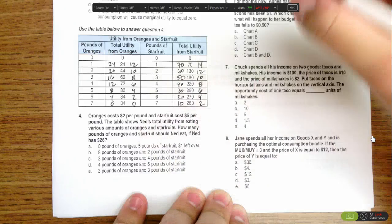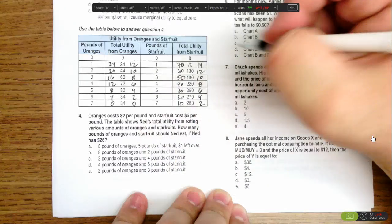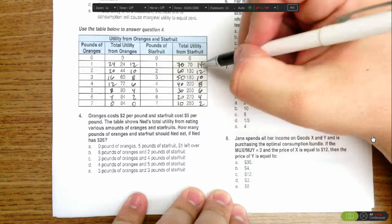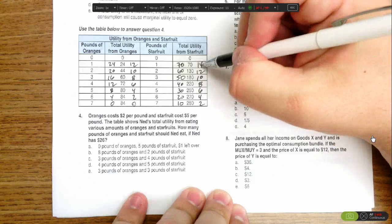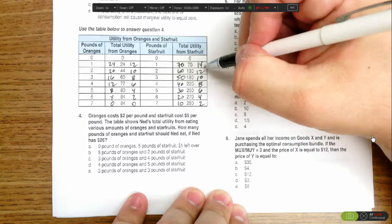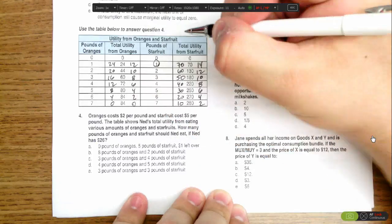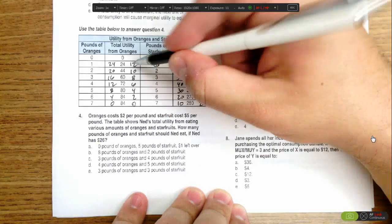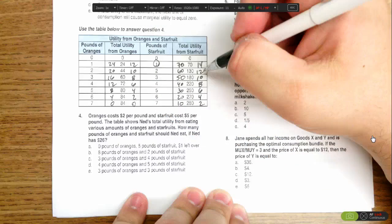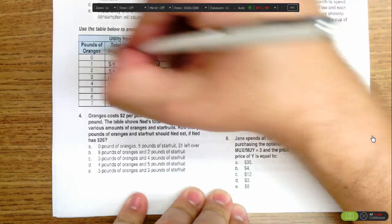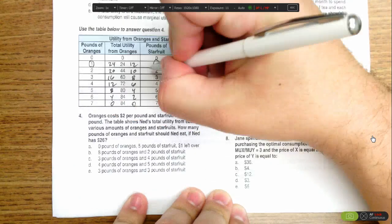So now we can figure out what the best combination is for his $26. The first thing he'll buy is a star fruit, because the utility per dollar spent is 14 versus 12, so he'll buy one star fruit. Then we go down and we say it's 12 for an orange, 12 for a star fruit. He's indifferent between the two, so he will buy both an orange and a star fruit.